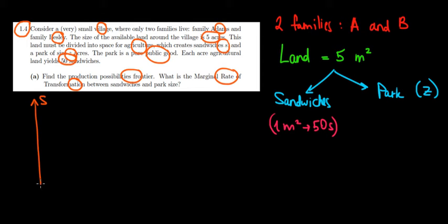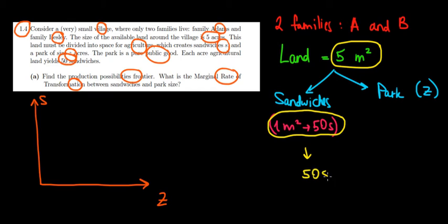This would be the sandwiches and on the other side we would have the park. The park is measured in size Z. Now what are going to be the intercepts? If we invest all the five meters squares into sandwiches and we know that one meter square is providing us fifty sandwiches, well fifty times five, fifty sandwiches times five meter squares, that's gonna give us 250 sandwiches overall.